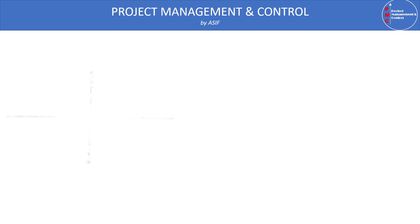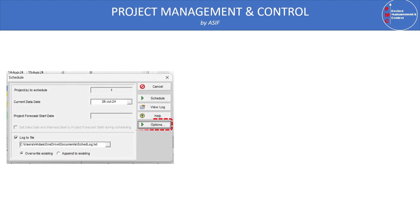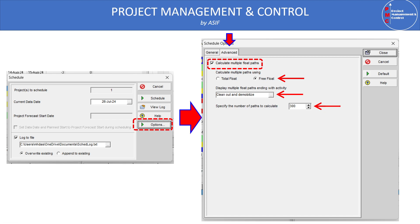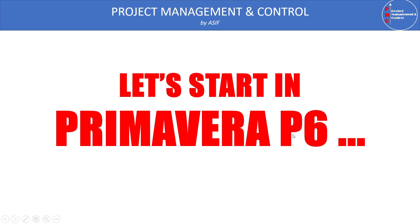As demonstrated: press F9, the Schedule dialog opens, click Options, the Scheduling Options dialog appears, select the Advanced tab, and check 'Calculate Multiple Float Path.' Once checked, the option to calculate using total float or free float is activated. Here we select free float to determine the status of an intermediate activity. Then we select the end activity — for example, clean-out and demolition — and specify the number of float paths, such as 300. This is the setting we need to make in Primavera P6.